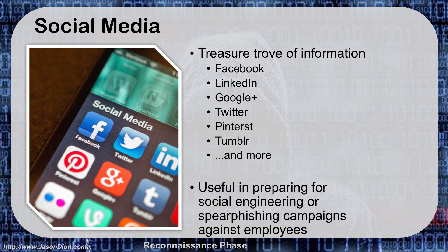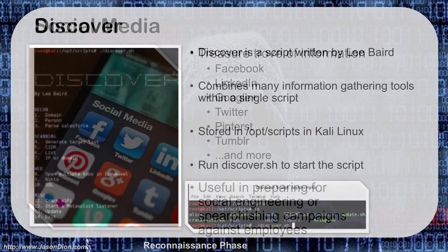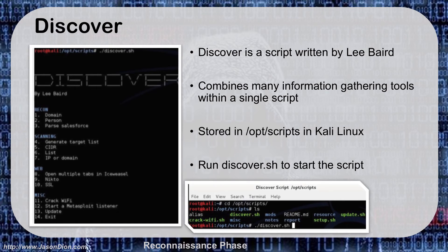One of the tools we'll use in our lab is called Creepy, which allows us to go after networks like Google Plus and Twitter. We can enter a username or keywords, and it will find the tweets and Google Plus entries associated with them. Using the Titan Cipher account, we can pull all tweets that person has made, geolocate them, and start establishing patterns of life — time of day, where they are, and what they do. Another tool that comes inside Kali Linux is called Discover. It combines many information-gathering tools into a single menu-driven script with about 15 to 20 tools, including recon, scanning, web browsing, and Wi-Fi password cracking.